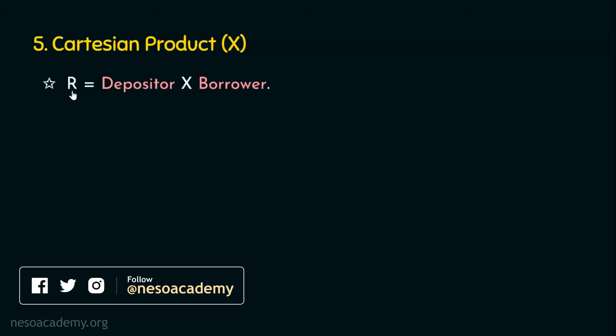The complete solution: first perform instructor cross teachers, then select where department name equals physics and instructor.id equals teachers.id, then project name and course_id. An alternate approach first selects physics department instructors from the instructor relation, then performs the Cartesian product with teachers, then applies the ID-matching condition, and finally projects name and course_id. Both approaches yield the same result.